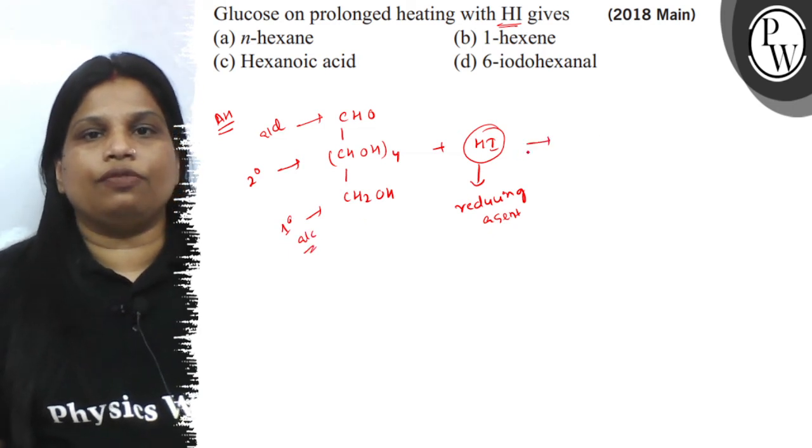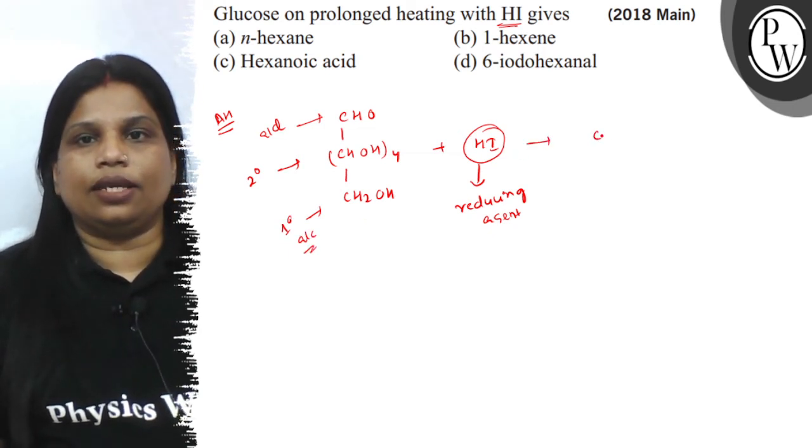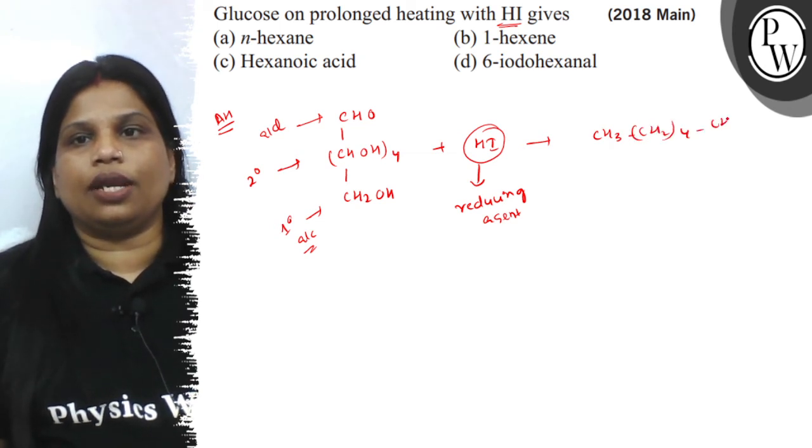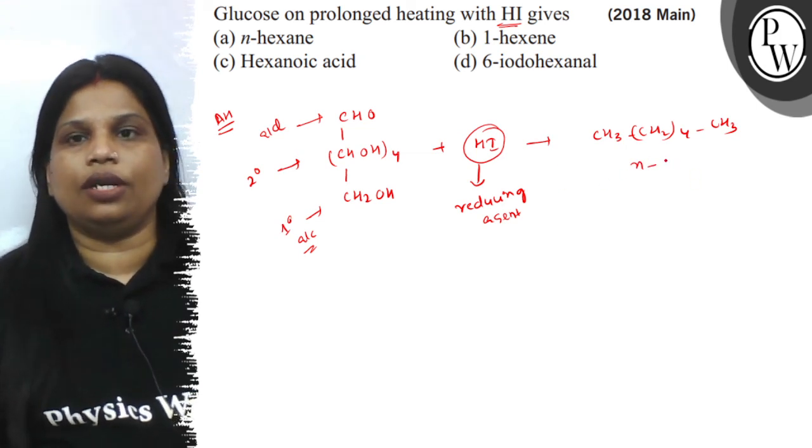And therefore, it will form n-hexane, CH3, CH2 whole 4 and CH3. So, prolonged reaction with hydrogen iodide will produce n-hexane.